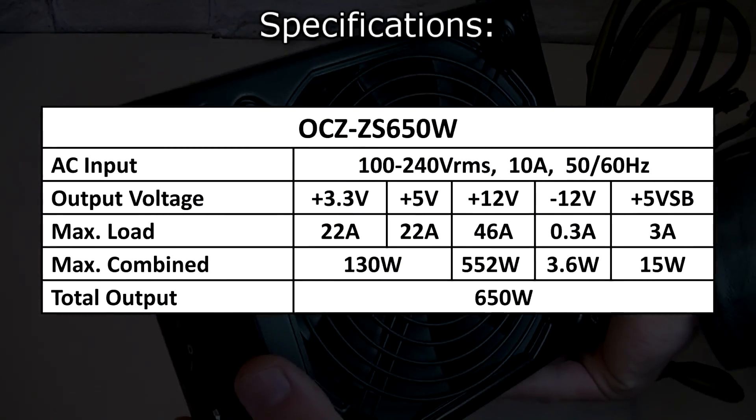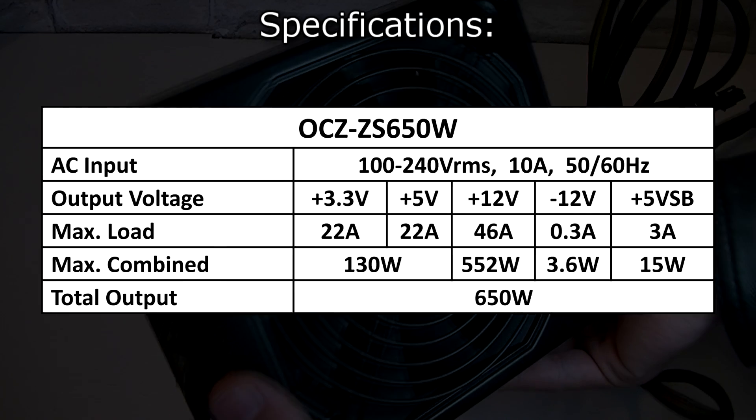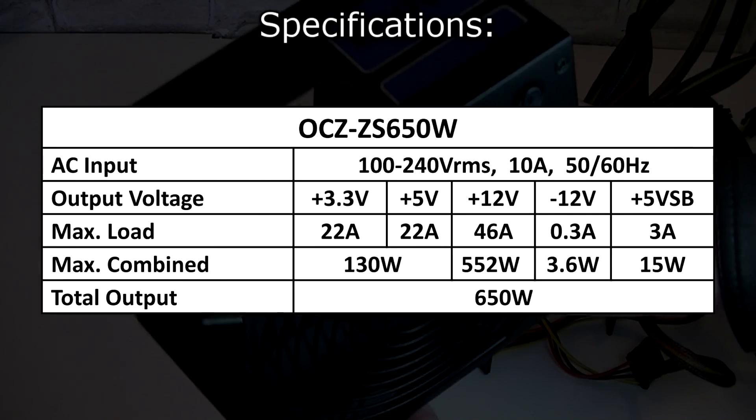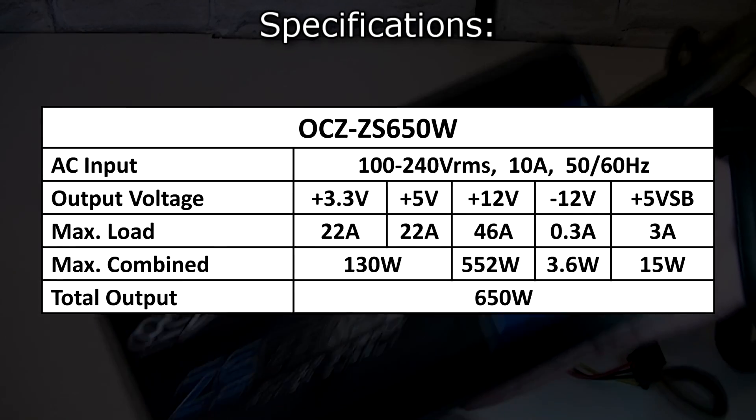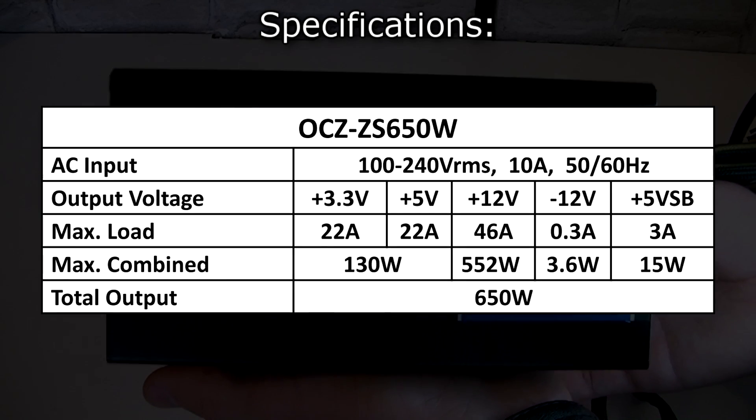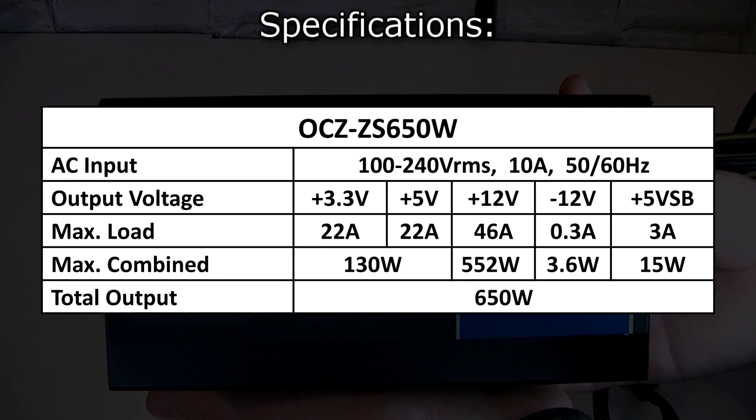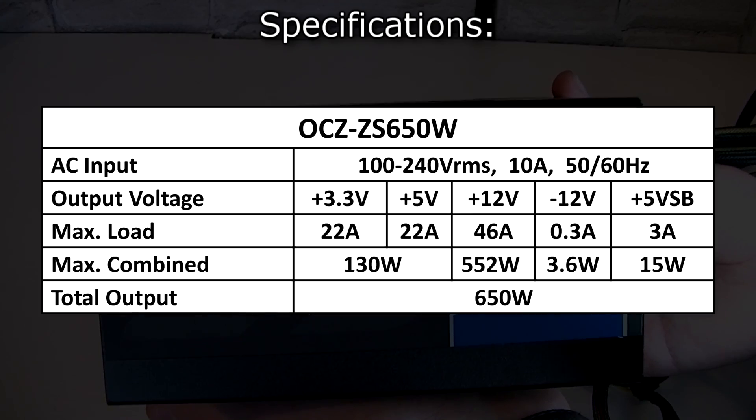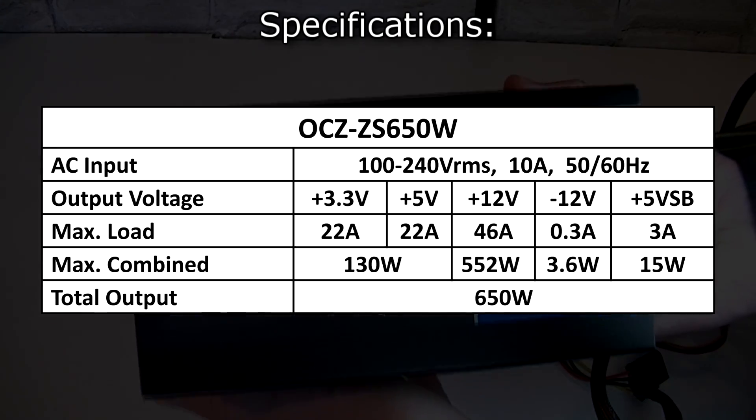It has a single plus 12 volt rail which has 46 amps and delivers 552 watts. The plus 3.3 slash plus 5 volt rails both have 22 amps and a combined max power of 130 watts. This power supply should deliver 650 watts at an ambient room temperature of 40 degrees celsius so that sounds pretty good.